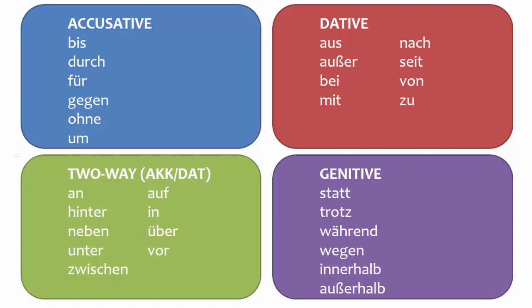There is one group of prepositions, known as the two-way prepositions, that is not randomly assigned. Those prepositions require the accusative when showing motion and the dative when showing location.